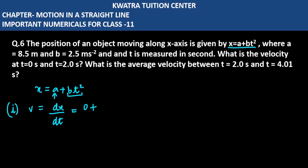What will happen to the bt square term? When we take the derivative, t square becomes 2bt raised to power 1. So the velocity will be 2bt.